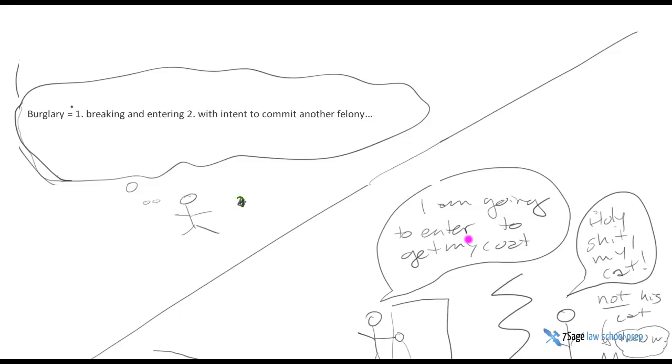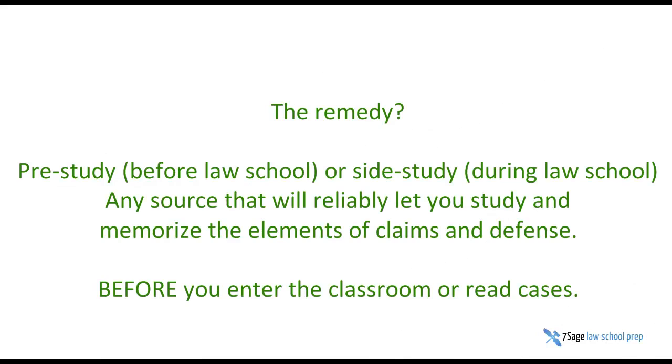Where this dude has the apparent intent to enter a house, that's the tooth from the last slide, to enter another person's dwelling to get a coat and then sees a cat that's not his and just takes it. If you were not given any of this stuff above the line and you're just supposed to figure out what these elements are from this fact scenario, now do you understand why so many of you are confused? Luckily, there's a remedy for this.